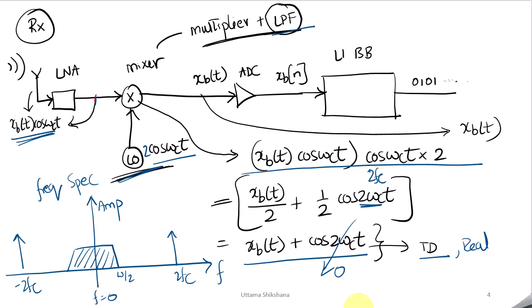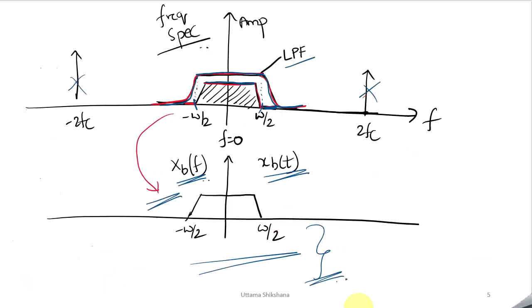I hope these basic concepts of up-conversion and down-conversion are clear. In Part 2, we will incorporate LO leakage — how it happens and how it introduces an unwanted DC component. We will derive that with equations and also see the effects at the baseband signal level. Thank you very much, bye bye, take care.